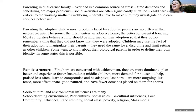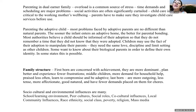Parents must investigate child care services before using them. Parenting the adoptive child: most problems faced by adoptive parents are no different from those of natural parents. The sooner the infant enters the adoptive home, the better for parental bonding. Most authorities believe a child should be informed of their adoption so they never remember a time when they didn't know. Children may use adoption to manipulate parents but need the same love, discipline, and limit setting as any child. They may later wish to know about their biological parents in order to find their own identity.